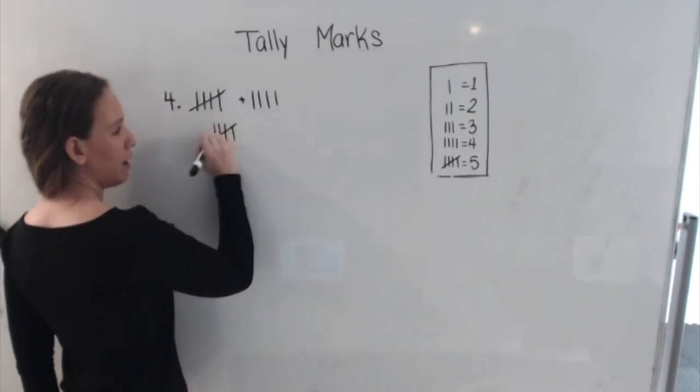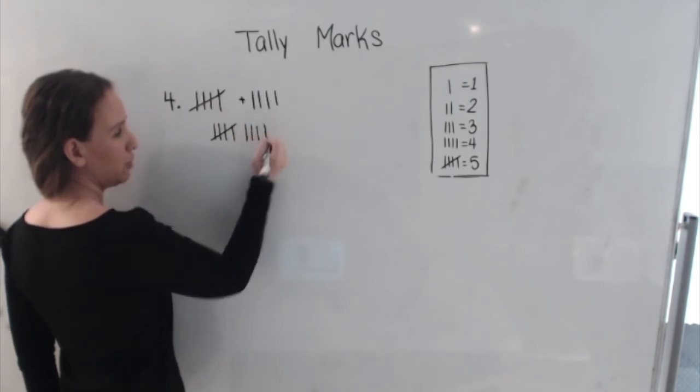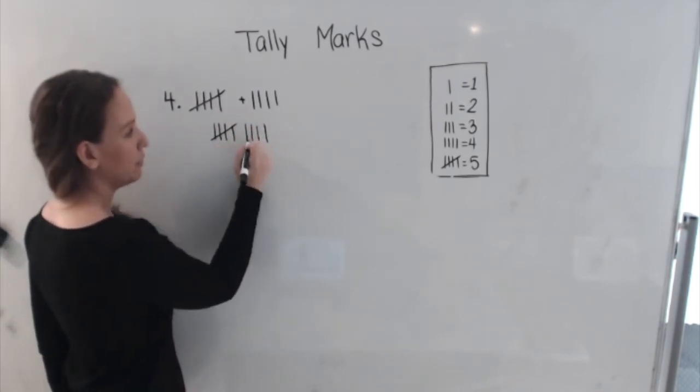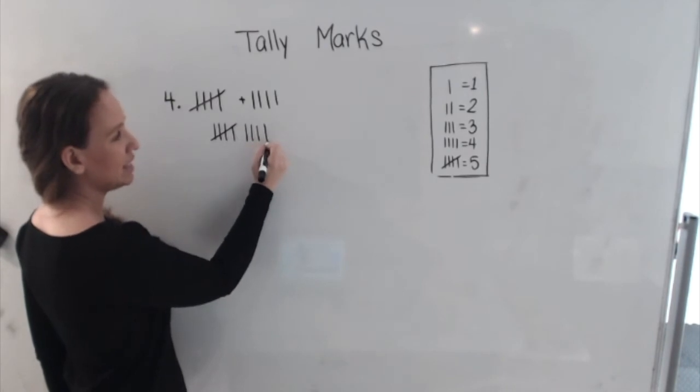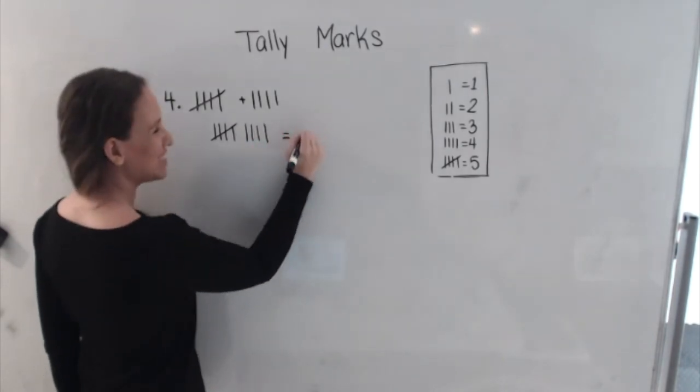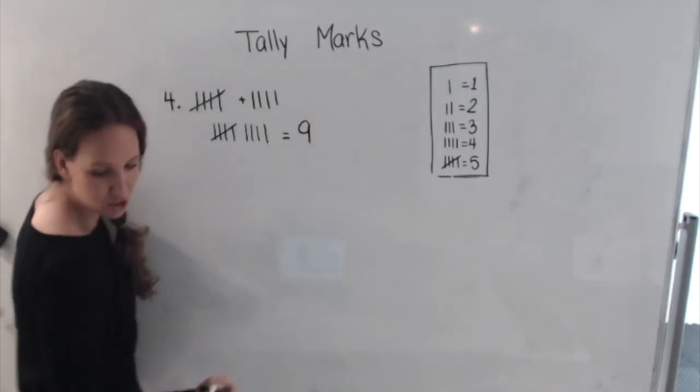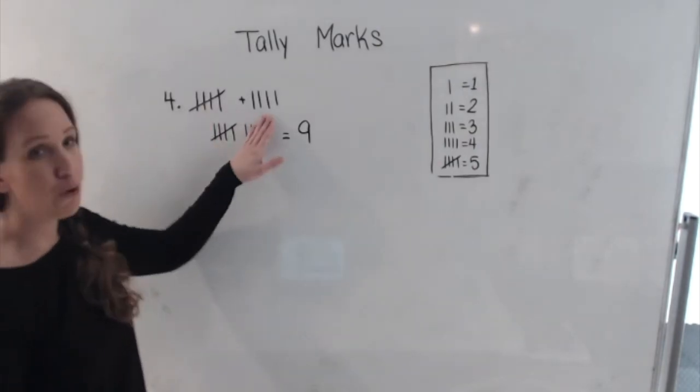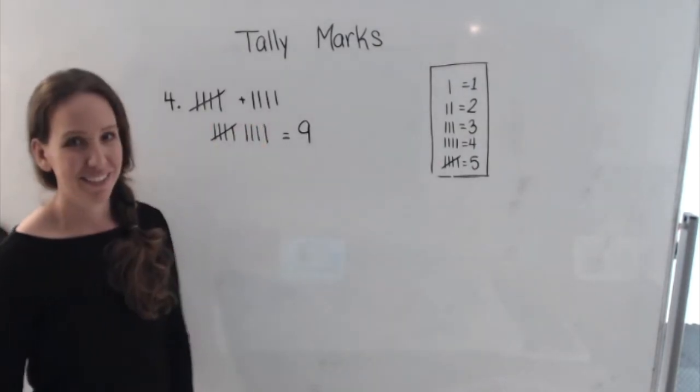So we have a set of five and four more. So we have one, two, three, four, five, and one, two, three, four. So let's count. We start with five. I'm going to go six, seven, eight, nine. That's right. That makes nine. So we have five plus four is nine. Great job guys.